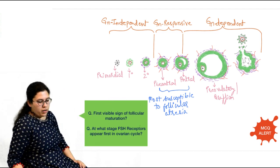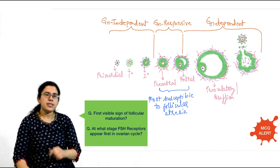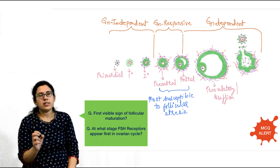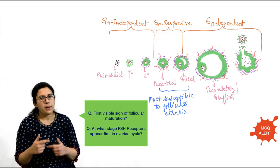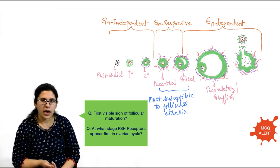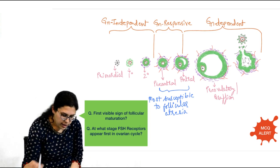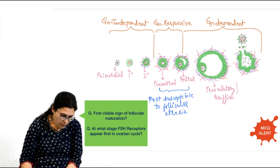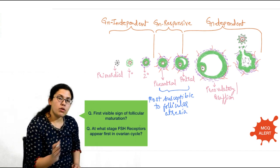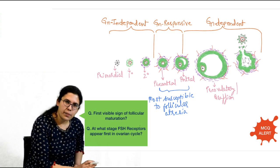From primordial follicle to primary follicle: the primordial follicle was surrounded by a single layer of spindle-shaped granulosa cells. These granulosa cells start maturing — they multiply, and from spindle-shaped they become cuboidal. There is change in shape and increased number of granulosa cells, and the oocyte also increases in size. This structure is now called a primary follicle. The first visible sign of follicular maturation is this change — increase in oocyte size and change in granulosa cell shape from spindle to cuboidal.